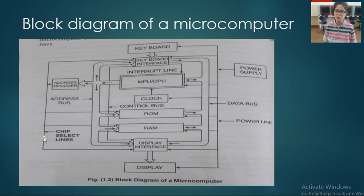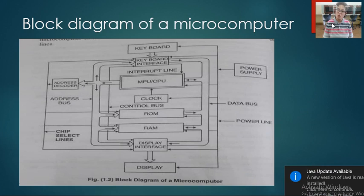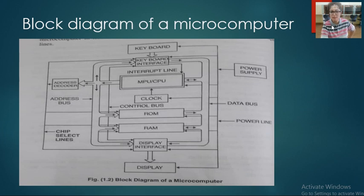Data bus is used to transfer the data, address bus is used to transfer the address, and control bus transfers all the control signals. Now, data bus is used to transfer the data — for example you want to transfer data 0, 1, 0, 2. How much data you can transfer? You can transfer only as much data as the size of the bus.